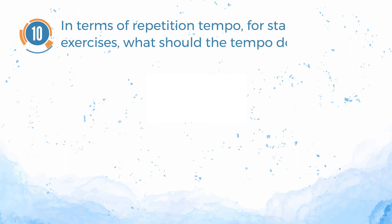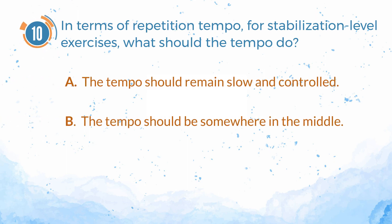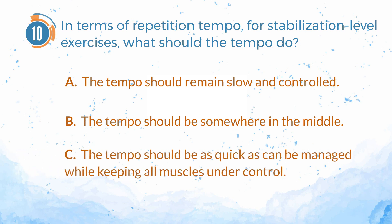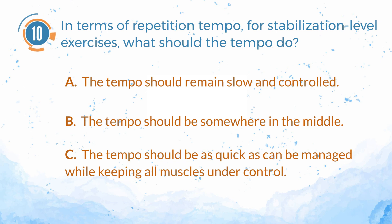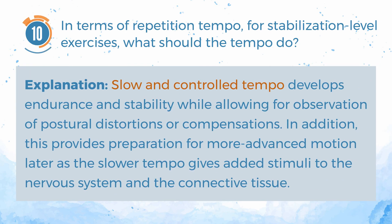Number 10. In terms of repetition tempo, for stabilization-level exercises, what should the tempo do? A. The tempo should remain slow and controlled. B. The tempo should be somewhere in the middle. C. The tempo should be as quick as can be managed, while keeping all muscles under control. The answer is A. The tempo should remain slow and controlled. Explanation: Slow and controlled tempo develops endurance and stability, while allowing for observation of postural distortions or compensations. This provides preparation for more advanced motion later, as the slower tempo gives added stimuli to the nervous system and the connective tissue.